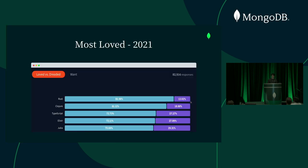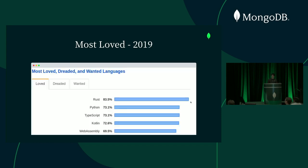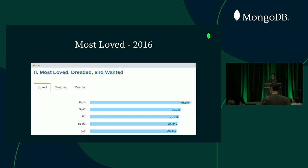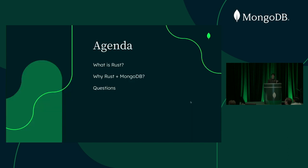You've all firsthand experienced the phenomenon of the Rust developer who loves to tell people to use Rust. And that's no surprise, seeing as it was voted the most loved programming language of 2021 according to the Stack Overflow Developer Survey — and also in 2020, and every single year since 2016. But if you're at this talk, you probably haven't used Rust before, or at least haven't used it with MongoDB. So you're probably wondering, what's the big deal? Well, that's what I'm here to talk about today.